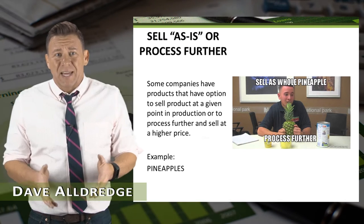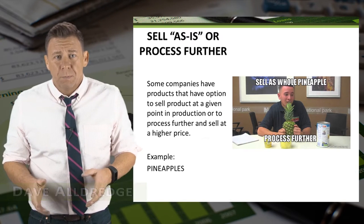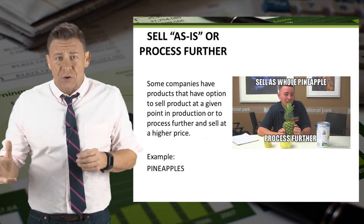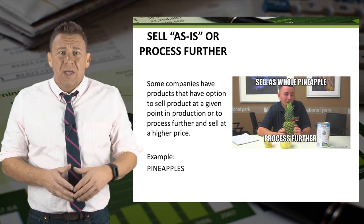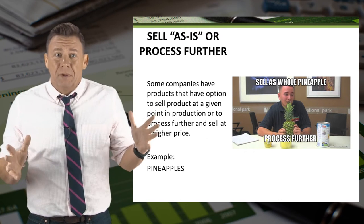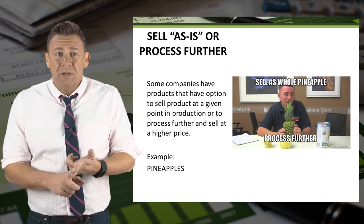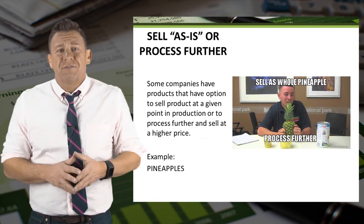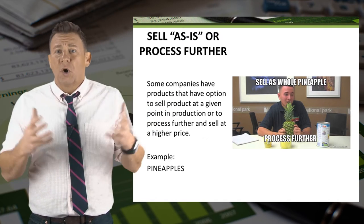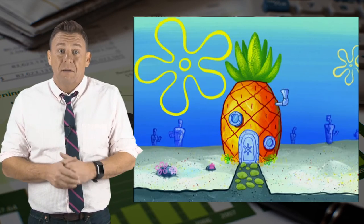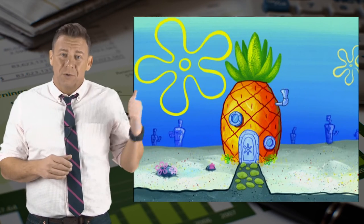Some companies have products that can be sold at some point during the production process, or processed further and sold at a higher price. The example I'm showing here is a pineapple. Pineapples can be sold as whole pineapples, or they can be processed further into canned, sliced, or pineapple chunks — and sometimes even further into underwater houses.